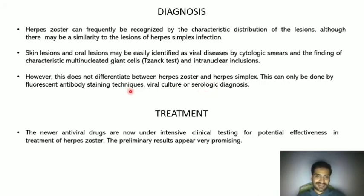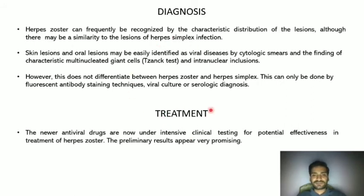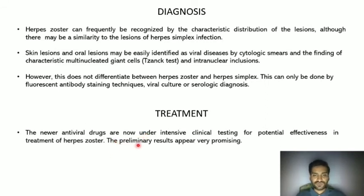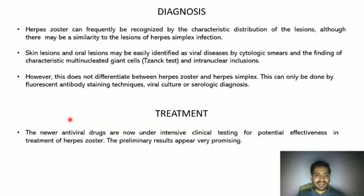For treatment, the main focus is antiviral therapy. The most common antiviral drugs used for herpes zoster are acyclovir or valacyclovir. Along with these, corticosteroids and symptomatic therapy can be given. Magic gel ointment can be used to treat vesicular eruptions or eroded areas on the skin for symptomatic relief.